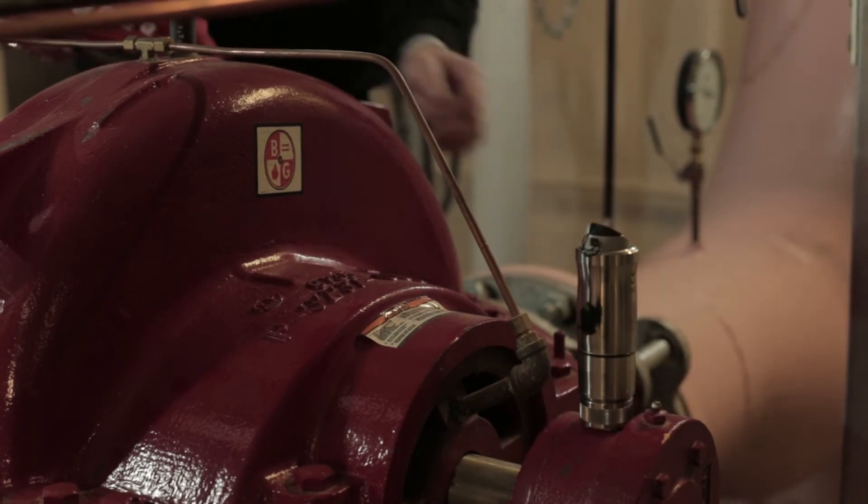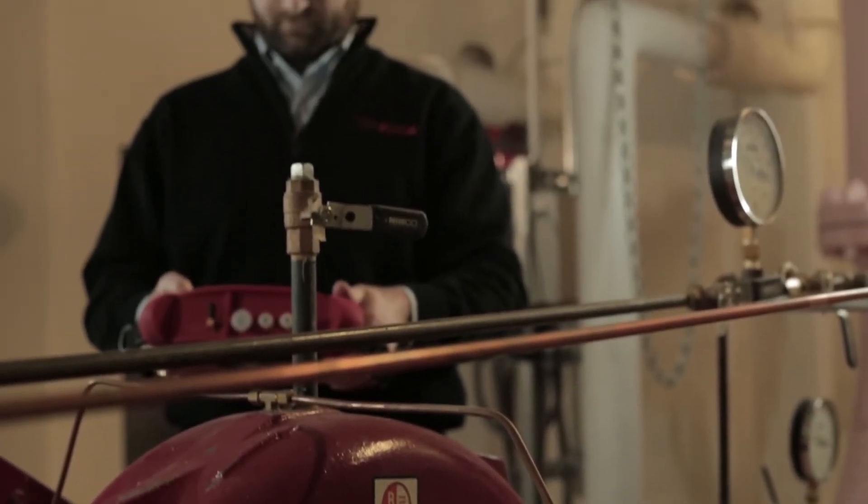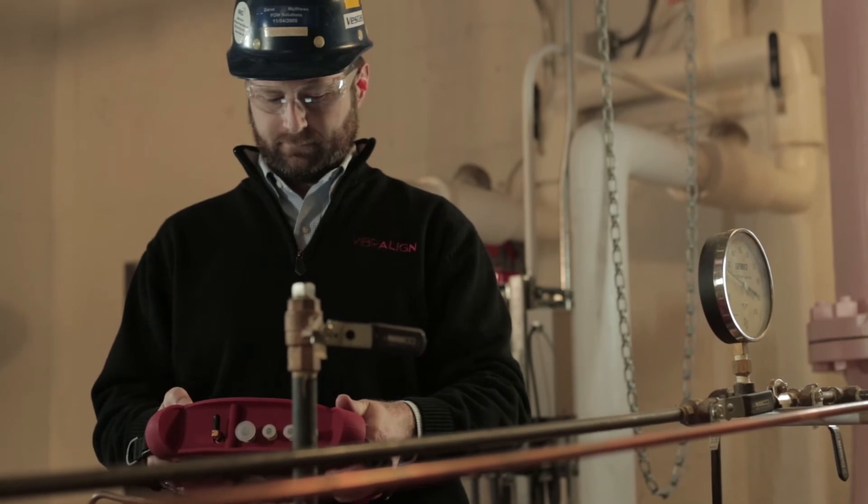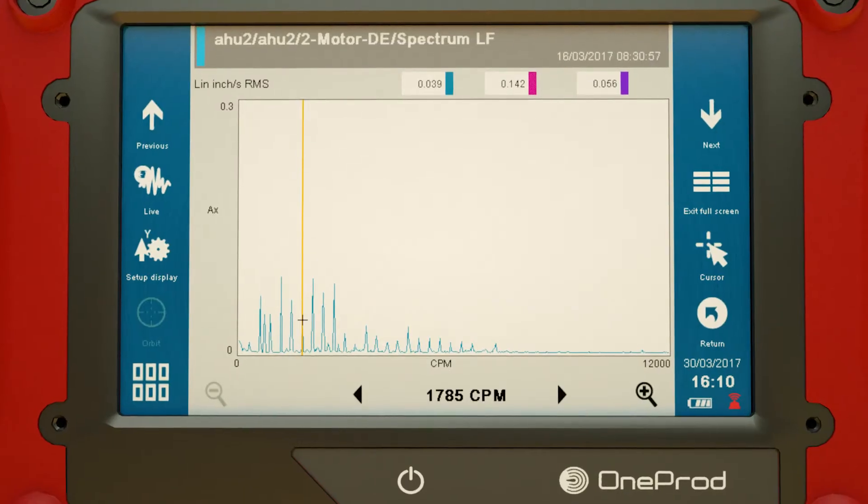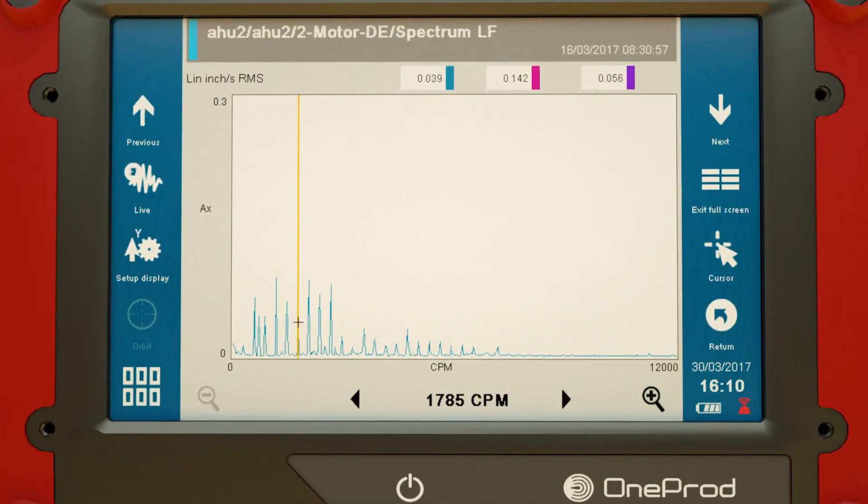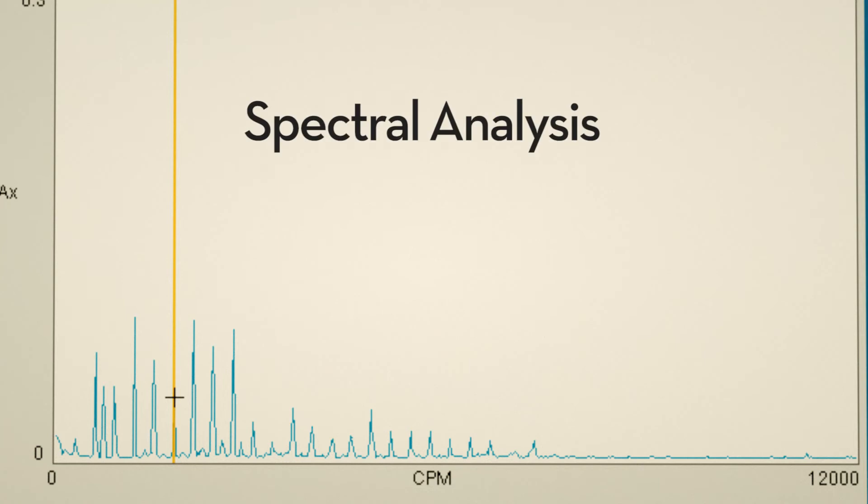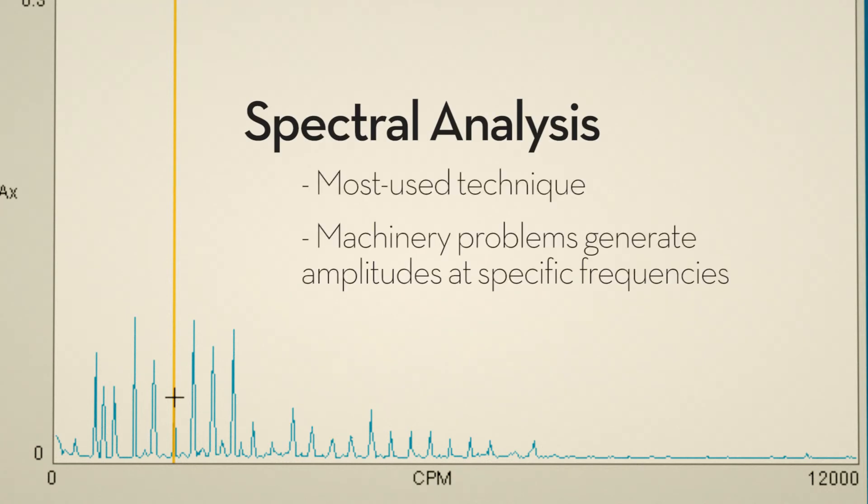While there are many techniques for looking at machinery vibration data to troubleshoot problems, spectral analysis is the most common. This is a vibration spectrum showing amplitude versus frequency. Spectral analysis is the most used technique because machinery problems generate amplitudes at specific expected frequencies.